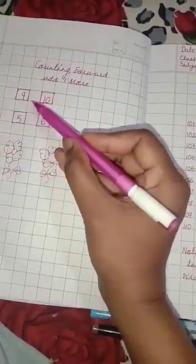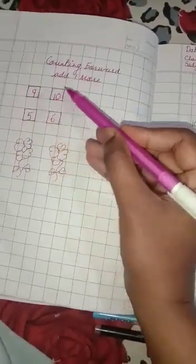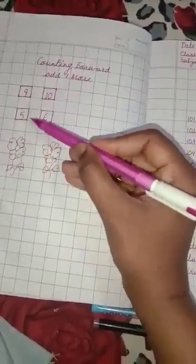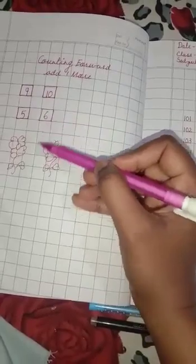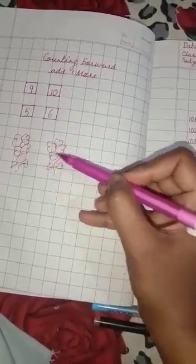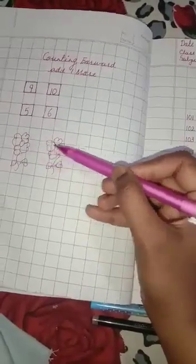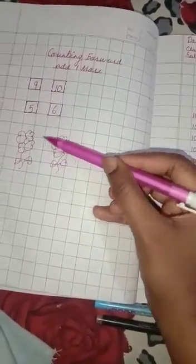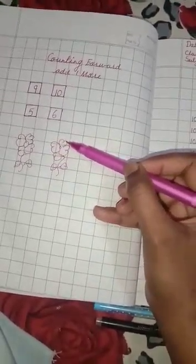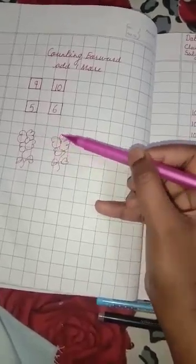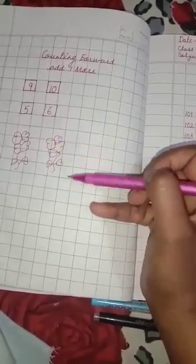9, 10, 10, 5, 6. Now, how many flowers? We see 2 flowers. How many flowers are we seeing here? 1, 2. 2 flowers. For example,